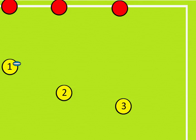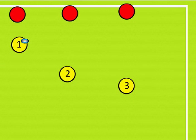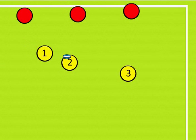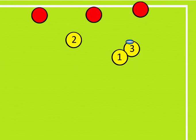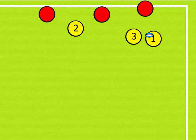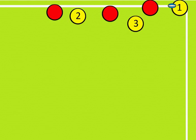Here is an example of the loop with opposition. Each member of the red team has a player to mark, yet because player one has looped around, there isn't a red player to get there quick enough, so one gets away with the ball down the edge of the pitch.